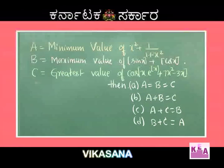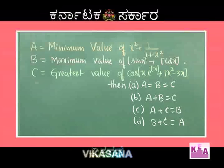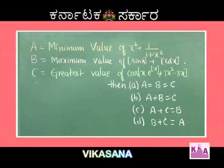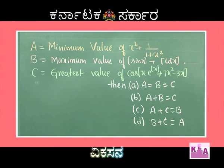Dear students, the next problem: A is the minimum value of x² + 1/(1 + x²). B is the maximum value of ⌊sin x⌋ + ⌊cos x⌋. C is the greatest value of cos(x · (eˣ + 7x² − 3x)). Then: A = B = C, A + B = C, A + C = B, or B + C = A.